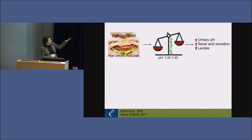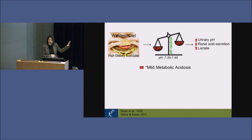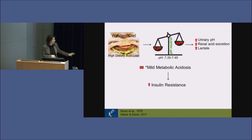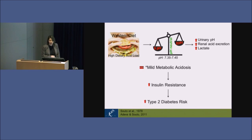We can measure body acidity in research. We term a decrease in body acidity within the normal range 'mild metabolic acidosis' — it's not pathological. We think that with long-term exposure to a Western-style diet, we end up on the side of mild metabolic acidosis, and there are studies now showing this is associated with insulin resistance and type 2 diabetes risk.